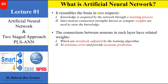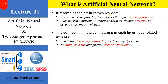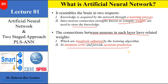ANN resembles the brain in two aspects. First, knowledge is acquired by the network through a learning process — formally or informally we learn different things. Second, inter-neuron connection strengths known as synaptic weights are used to store knowledge, similar to how we store information in our minds by associating it with certain events in our life. The connections between neurons in each layer have associated weights which are iteratively adjusted to minimize error and provide accurate prediction — working almost the same way as the human brain.